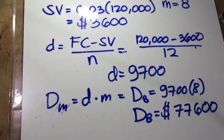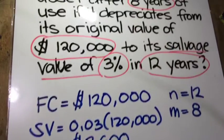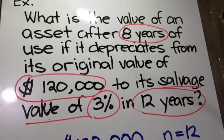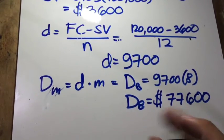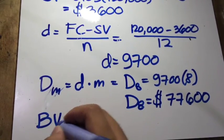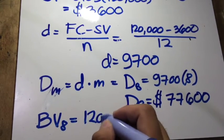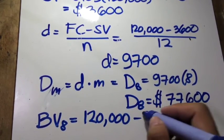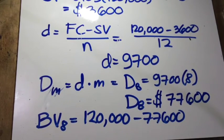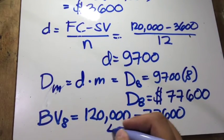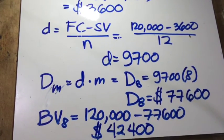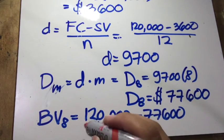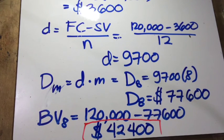That's the total depreciation after 8 years. We are being asked what is the value after 8 years, so we simply subtract the depreciation from the first cost to get the book value. The book value after 8 years is equal to $120,000 minus $77,600, which is equal to $42,400. That is our book value — that's the value of our asset after 8 years.